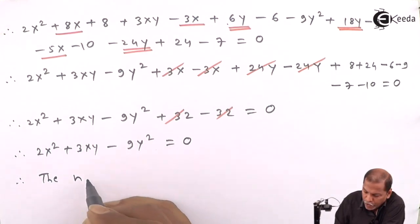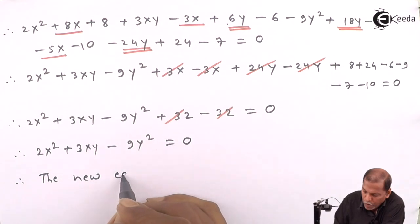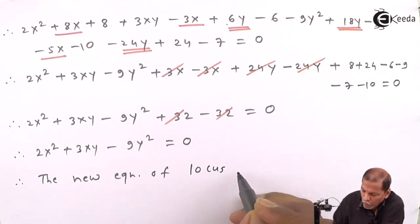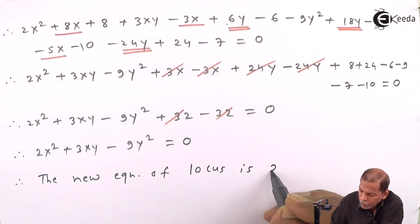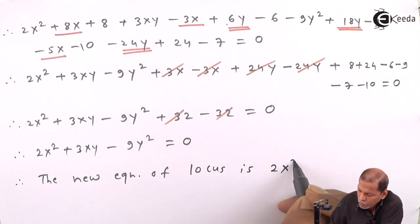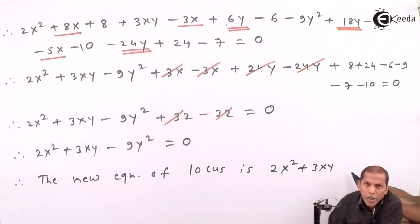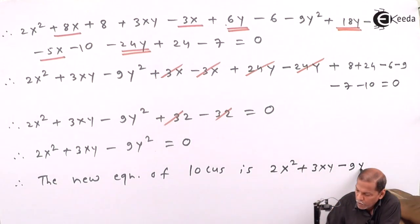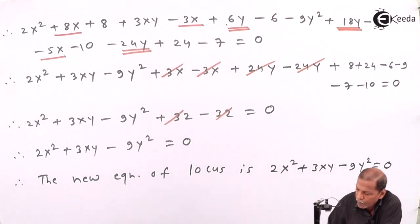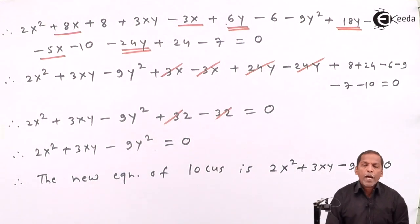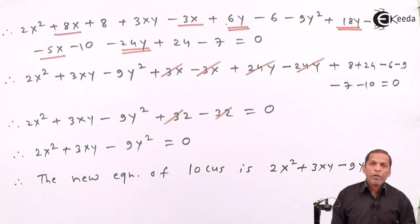We are left with 2X² + 3XY - 9Y² = 0. Therefore the new equation of locus is 2x² + 3xy - 9y² = 0. This is the required solution for the given problem. Thank you.